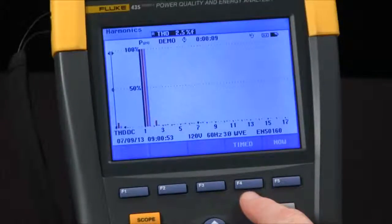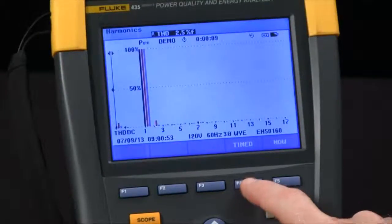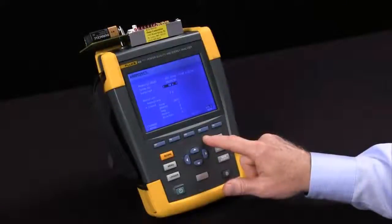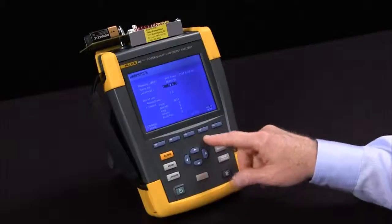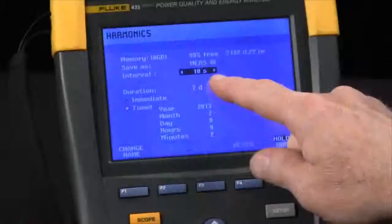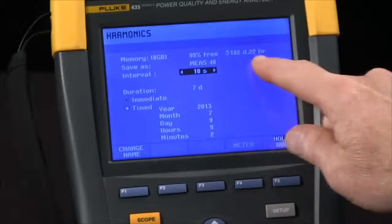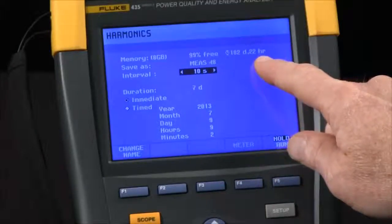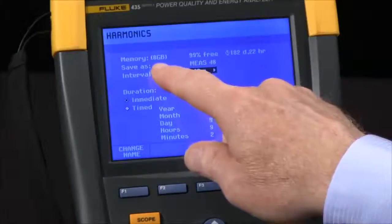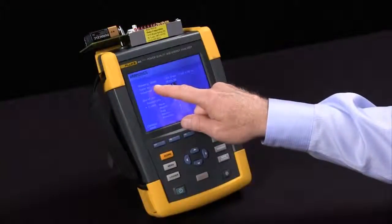Now I have the option to do a timed test. This is very helpful for determining file size when I'm doing trending. Right now with the default 10 second interval, we could record for 182 days. That would create an eight gigabyte file, much too large to deal with effectively with PowerLog software.